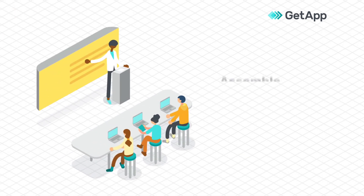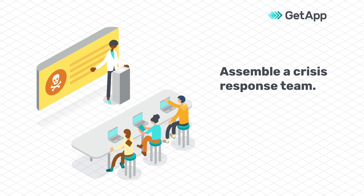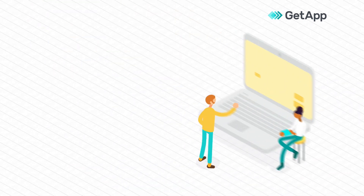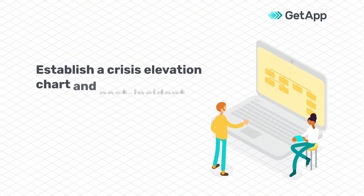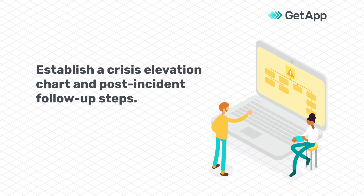Start by defining what a cybersecurity incident is at your organization, and assemble a team to respond to any future attacks. Next, create a flowchart for crisis elevation. This allows each member of your response team to see the steps they should follow after an incident.